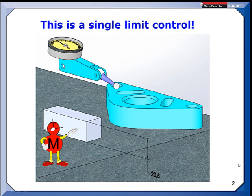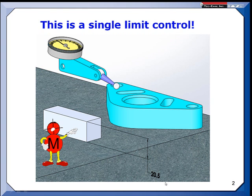It could be done with a hard gauge. Or another approach would be to master an indicator at the 20.5 value, and then when you run the indicator over the part with the part sitting down on the surface plate, all your readings better go down. If any of them go above 20.5, the part wouldn't have fit through that slot or gauge. This is a way of simulating a hard gauge without ever building one.